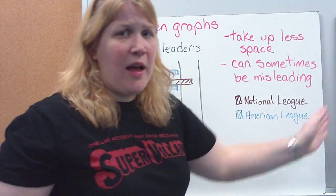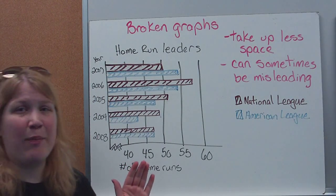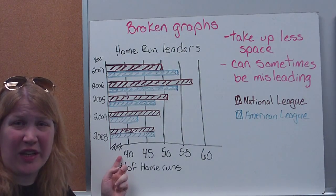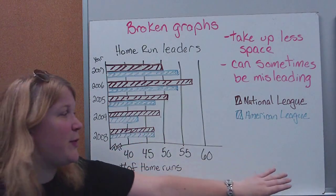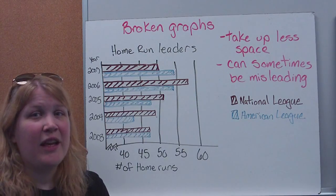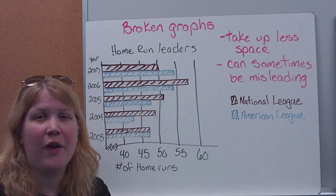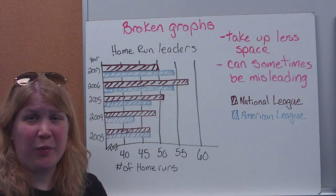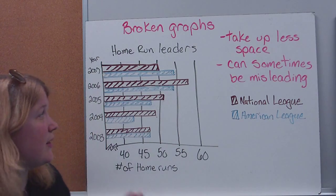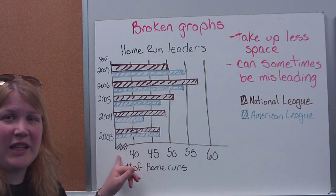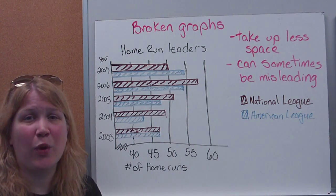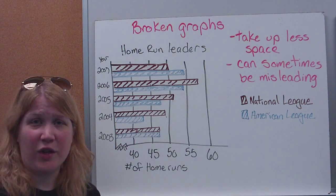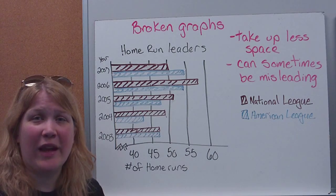Let's take a look at one more. What I've drawn here is what we call a broken graph. These are okay to use — the advantage is they take up less space because I started the scale at 40 instead of zero. However, you have to be aware that sometimes people use a broken graph to give misleading data — it can look more impressive or less impressive than it really is. If you use one, you need to let people know it's broken. You'll usually see these little crinkly lines to indicate this is a broken graph.